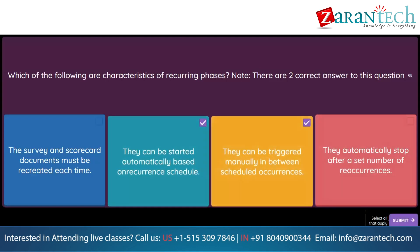Question. For which SAP Ariba project type are ad hoc custom fields supported? Option 1: Supplier performance management project. Option 2: Supplier qualification project. Option 3: Supplier registration project. Option 4: Supplier request project.